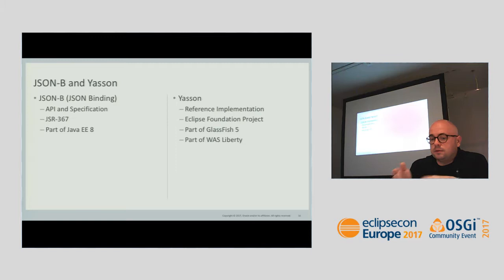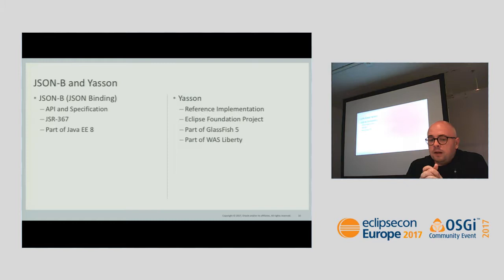What's the difference between JSON Binding and YASSON? Sometimes people don't understand. JSONB is the interface — the standard. YASSON is the implementation — the reference implementation of that standard. YASSON is an Eclipse Foundation project. It's part of GlassFish 5, part of WebSphere Liberty, and possibly other application servers. All of this is going to be transferred to EE4J very soon.